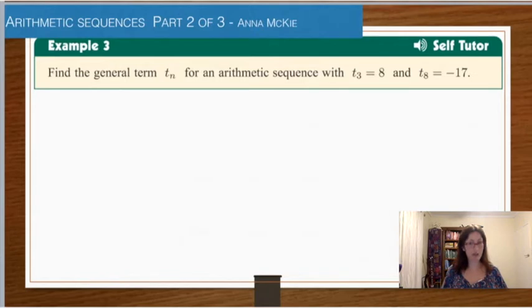Finding the general term tn for an arithmetic sequence with these two terms. So we know the 3rd term and the 8th term, but what is the general term for every term in the sequence? Shortly in this video you'll see all the setting out written out exactly as you need to, but I want to get your thinking started.